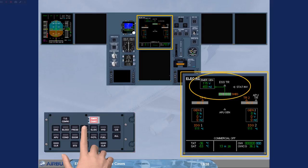Notice that the EMERGEN box and its parameters have appeared. The emergency generator supplies the AC essential bus and the essential TR. Note also that the AC essential shed bus is shed due to the limited power of the RAT.